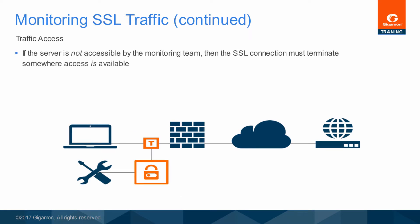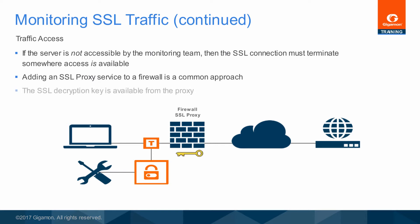When the server supporting an encrypted communication session is not within the control of the network owner, such as any internet destination, a path is established from inside a secured network to an unknown destination. Traffic flowing within this path may or may not meet the policies of the network owner. To gain access to this encrypted traffic, the most common approach is to force all such traffic through an SSL proxy. The proxy may be a separate appliance or may be part of another security device, such as a firewall. For clients inside the secured network, the proxy acts as the destination for an encrypted session; on the outside, the proxy opens a second connection to the original destination. For the purposes of gaining access to this encrypted traffic stream, the proxy is the local server and a private key may be obtained from it to use for decrypting the traffic.